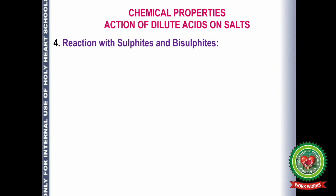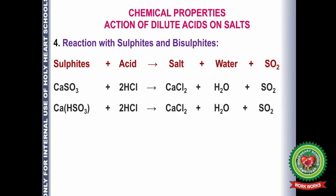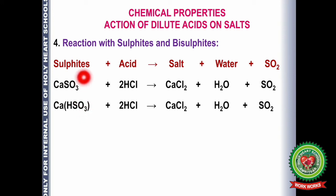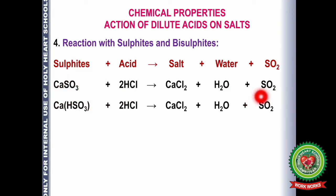The next reaction is of acids with sulfides and bisulfides. When the anion is SO₃²⁻ it is known as sulfide, with valency minus 2. When it is HSO₃⁻ it is known as bisulfide, with valency minus 1. When a salt containing SO₃ reacts with HCl or H₂SO₄, it gives SO₂ gas, which has a burning sulfur-like smell, along with the corresponding salt and water.